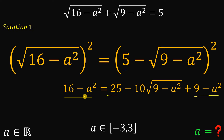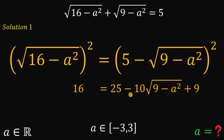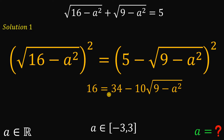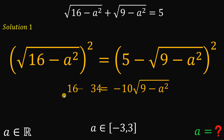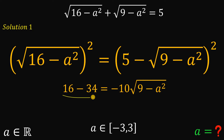Let's combine like terms. We can eliminate negative A squared on the left side and negative A squared on the right-hand side by adding A squared to both sides. Combining 25 and 9 gives us 34. Then we subtract 34 from both sides, and 16 minus 34 gives us negative 18.